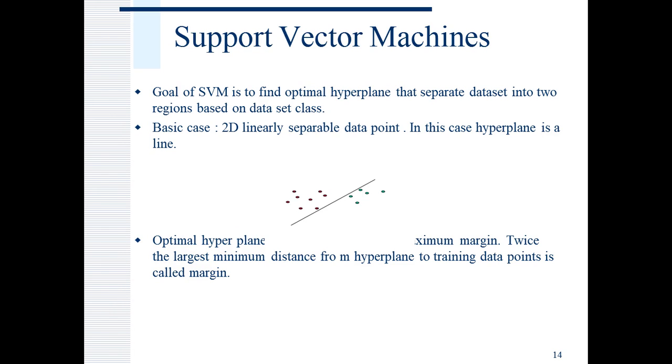Let us discuss support vector machines. These are supervised learning algorithms. In SVM, we try to find a hyperplane that separates dataset into two mutually exclusive regions. Consider a two-dimensional case as shown in this figure. A hyperplane is simply a line. For three-dimensional 3D, it would be a plane, and so on. There are infinite choices of hyperplane when data is linearly separable. In SVM, we choose optimal hyperplane that maximizes the margin. Margin is twice the largest minimum distance from hyperplane to training data points.